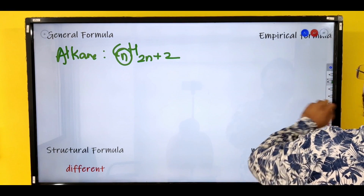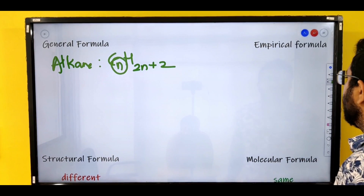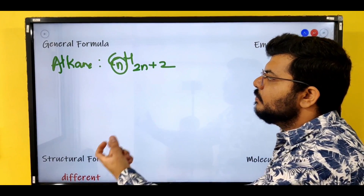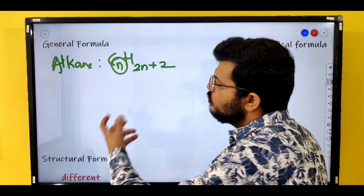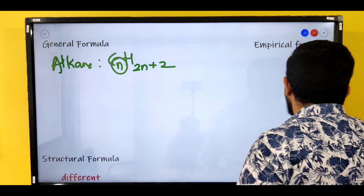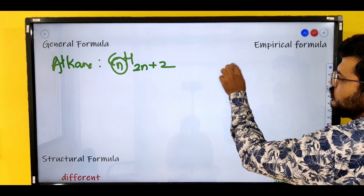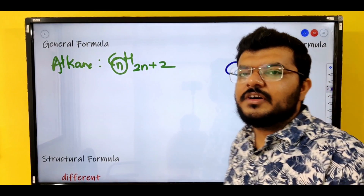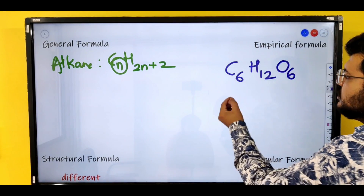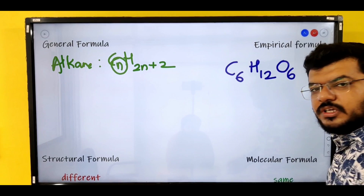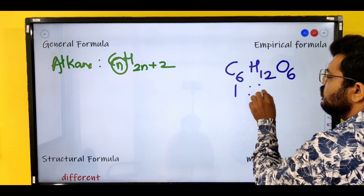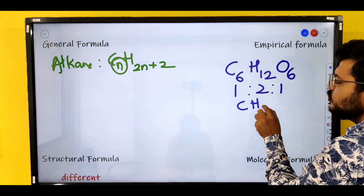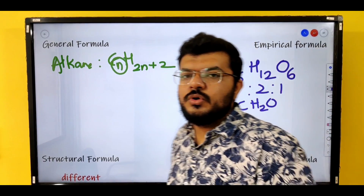Then we have empirical formula. What is an empirical formula? Empirical formula is the general ratio between the number of atoms of the elements combining. Let's take for example the formula of glucose: C₆H₁₂O₆. If you take 6 as the HCF, the ratio is 1:2:1. So the empirical formula of this is CH₂O.